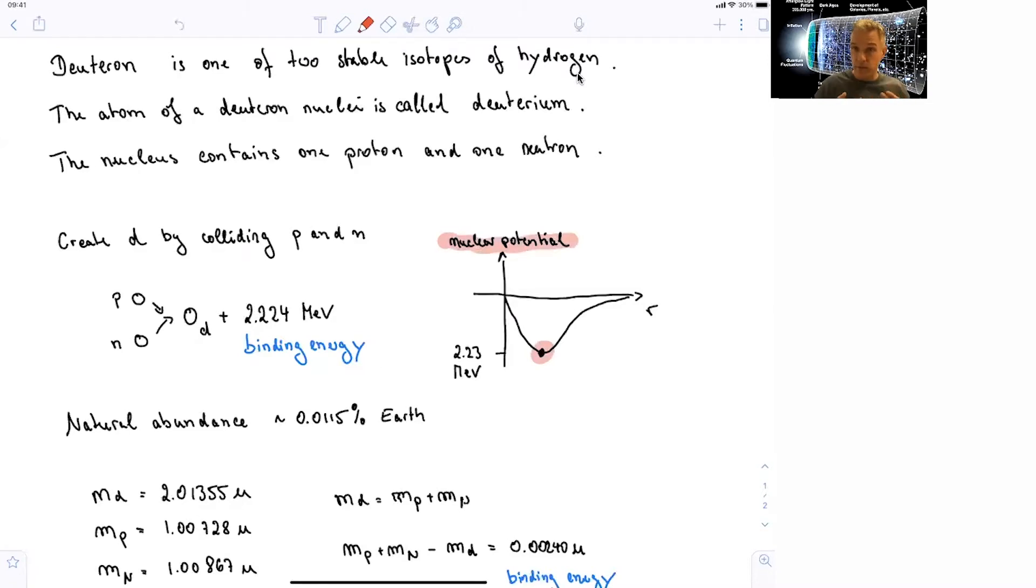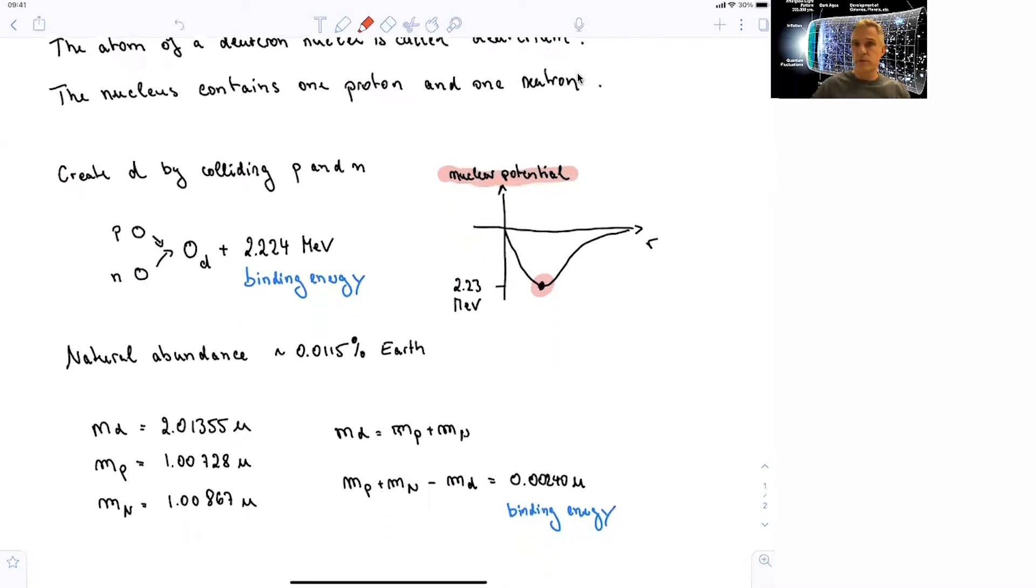In order to now split up the deuteron, which is stable, we have to add energy. We have to add at least 2.3 MeV of energy in order to release the proton and the neutron and make them free. The natural abundance of deuterium in the Earth is rather limited, with 0.015% in the Earth. But nevertheless, deuterium is extremely useful and extremely important in the evolution of the universe, in the synthesis of more heavier elements, as it's kind of a part of the chain which allows the creation of helium. And then helium can be used in order to create even heavier nuclei.